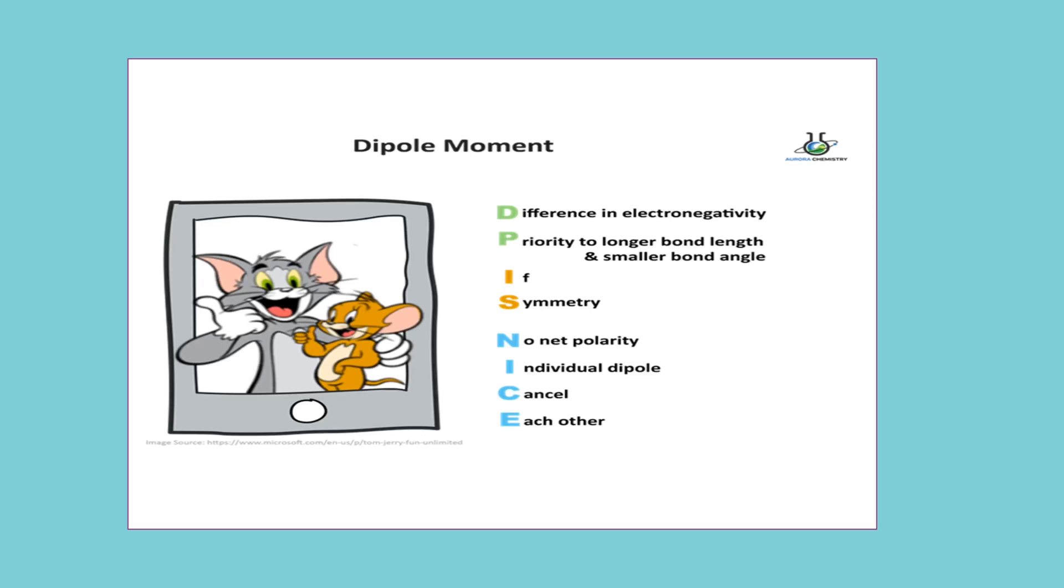For the mnemonic: N is no net polarity, I is individual dipole, C is cancel, E is each other. For P - priority to longer bond length and smaller bond angle - it means if the bond angle is smaller, then the dipole moment is higher.